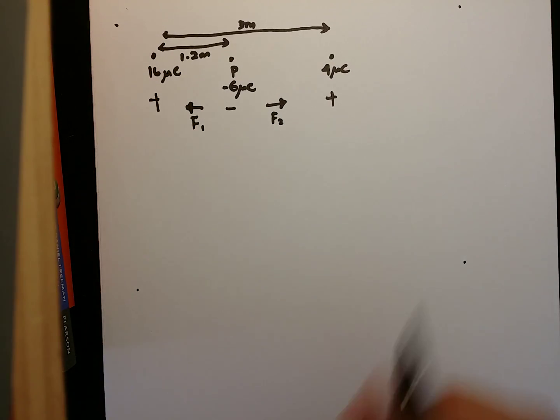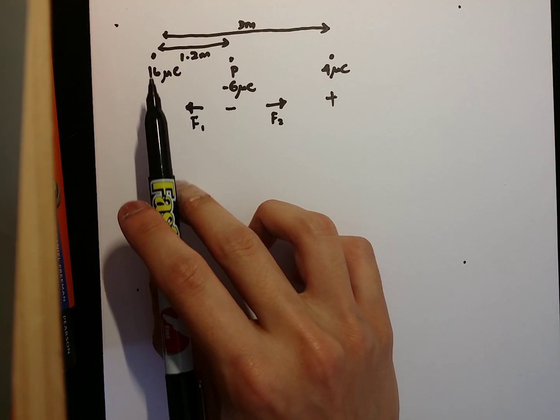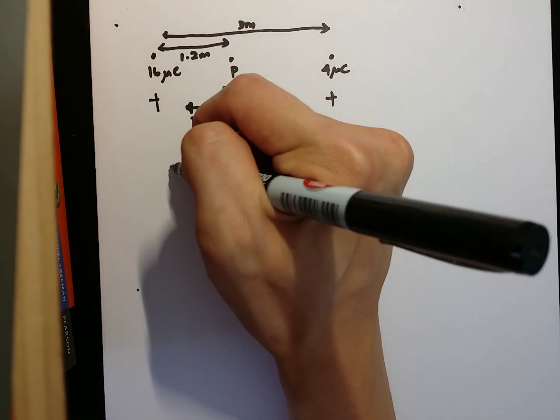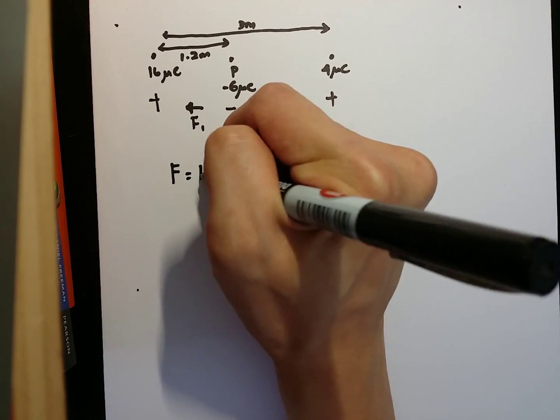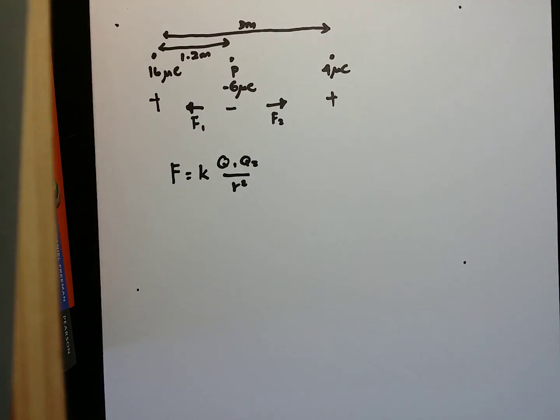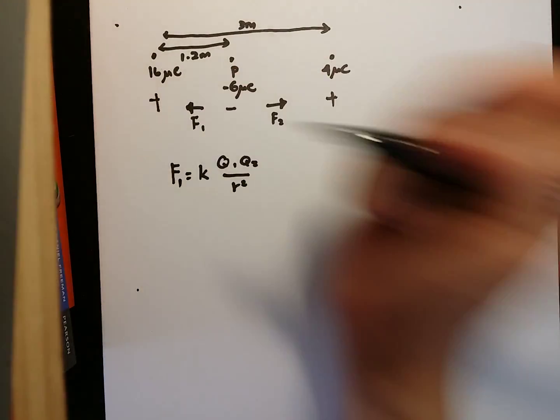Now, in order to find F1, that will be the interaction between this charged particle and this charged particle. So what we do is take F equals to k, Q1, Q2, over r squared, as F1.